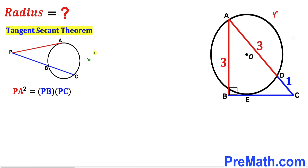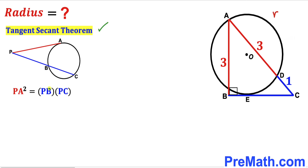As you can see in this diagram, PA is the tangent and PC is the secant. According to the tangent-secant theorem, PA² is going to be equal to PB times PC.